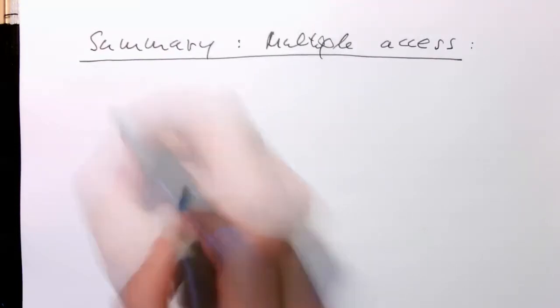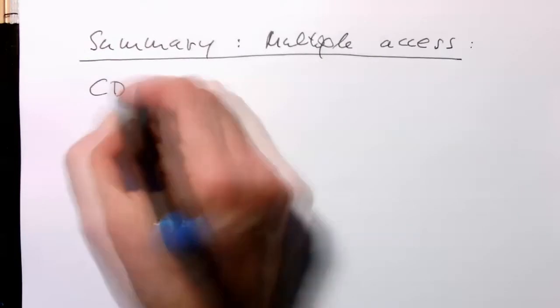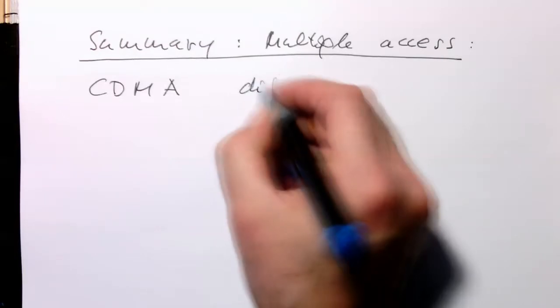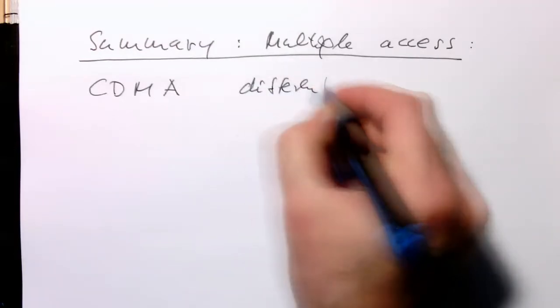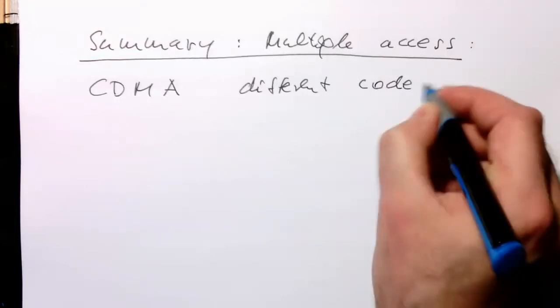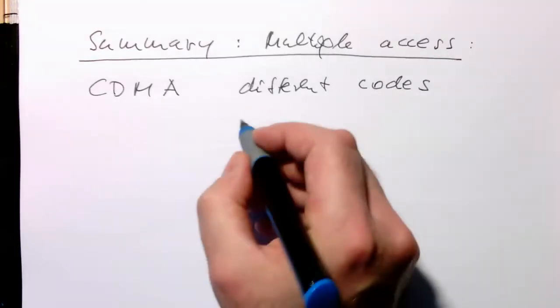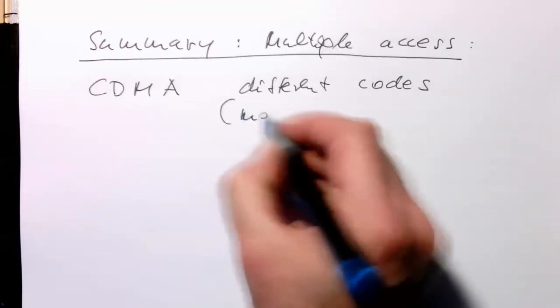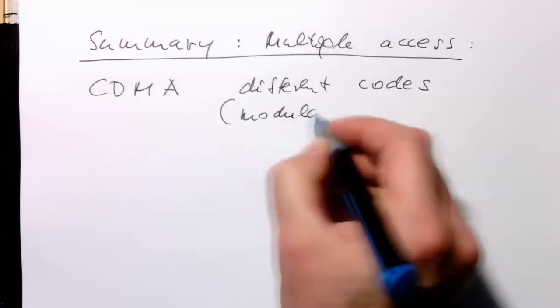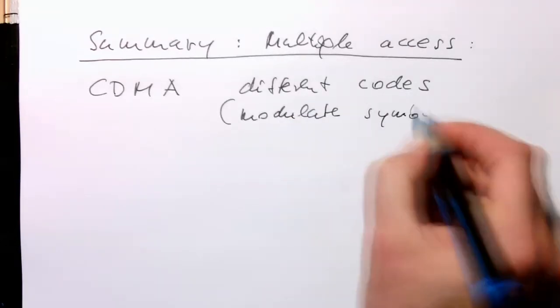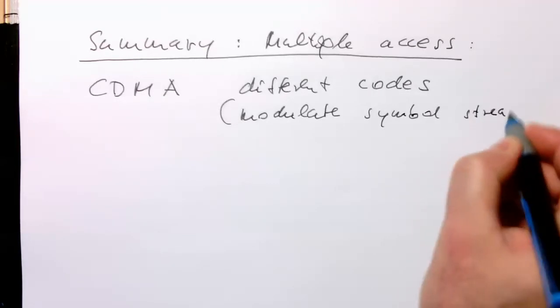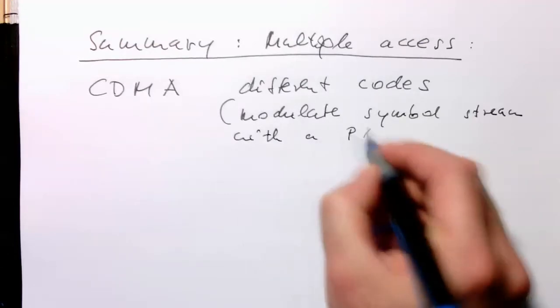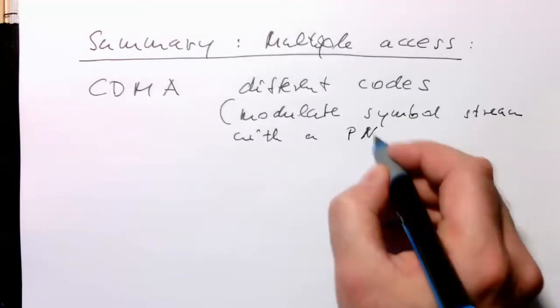We've got our CDMA. We're directly using different codes, as shown in the last clip. Modulate symbol stream with a pseudo-random number sequence.